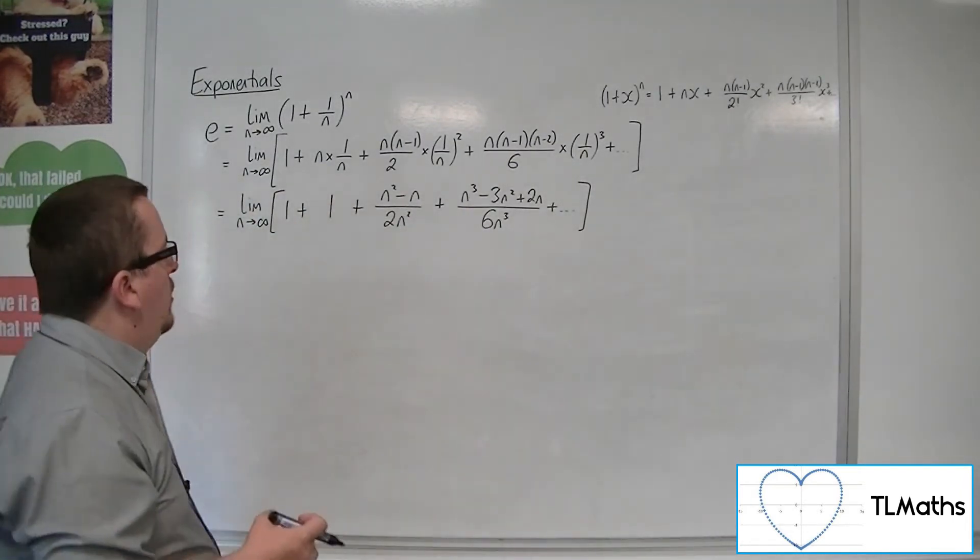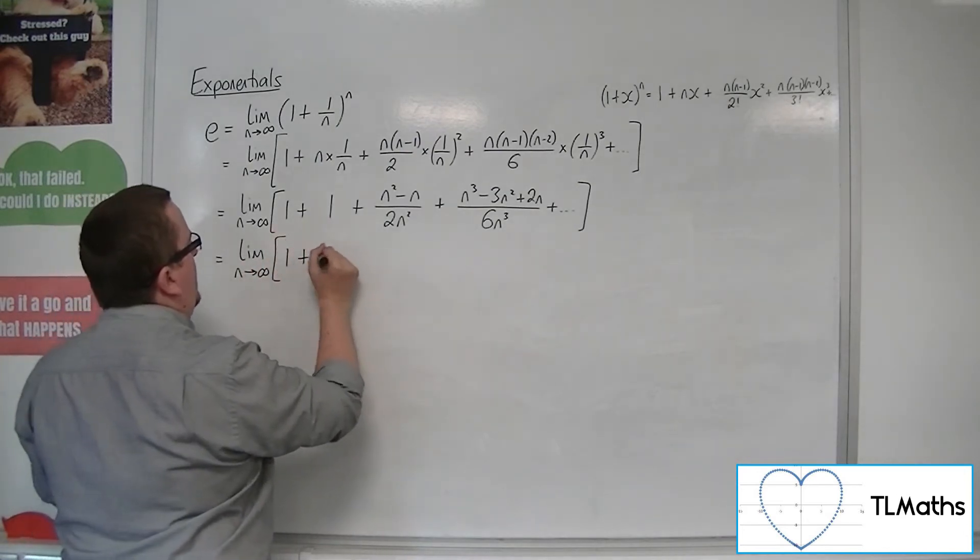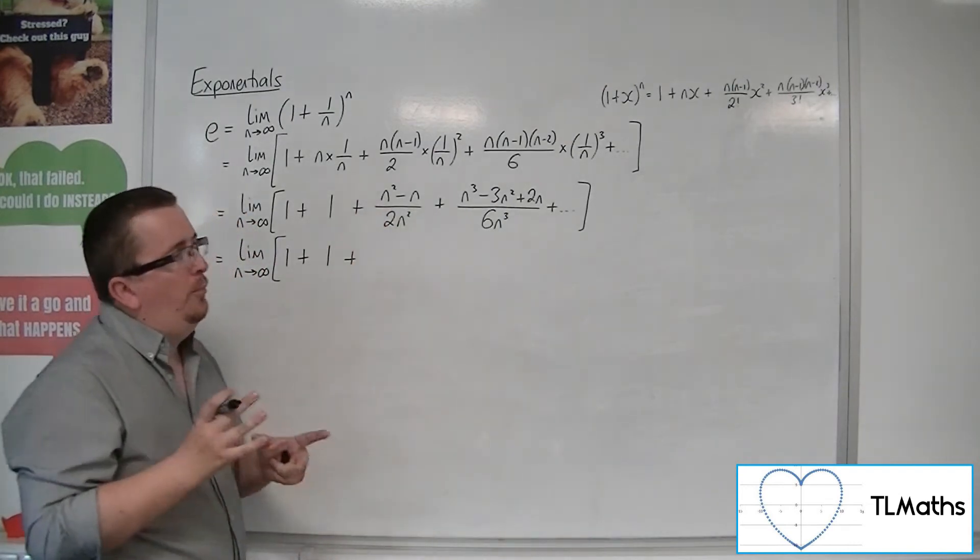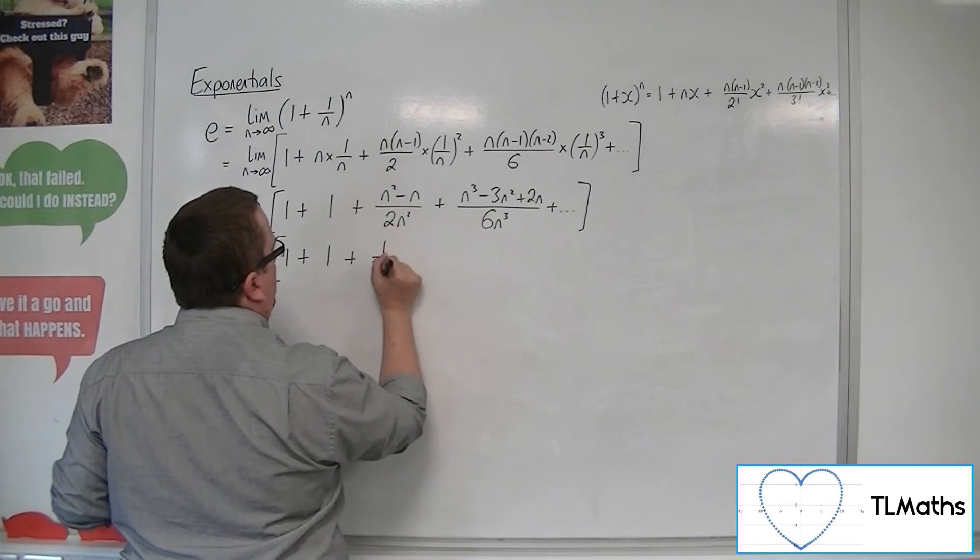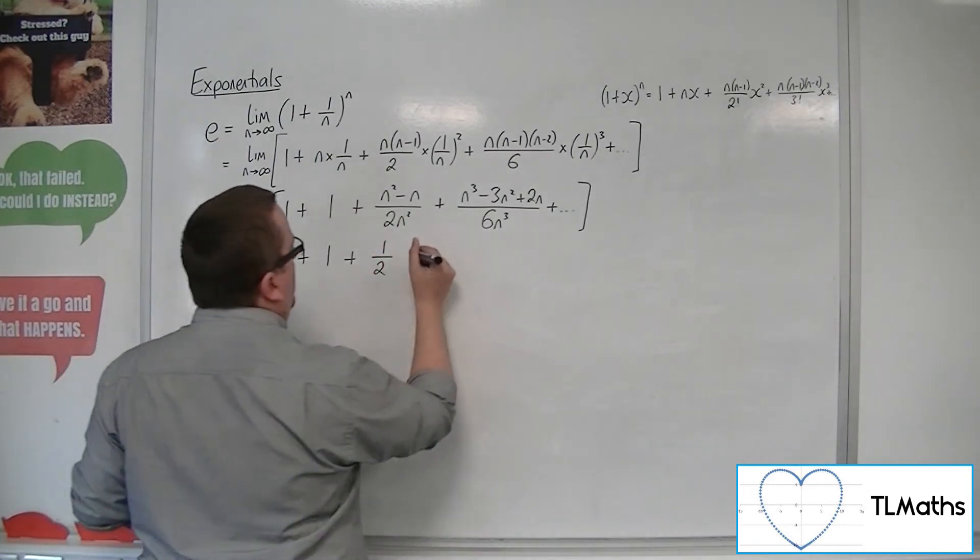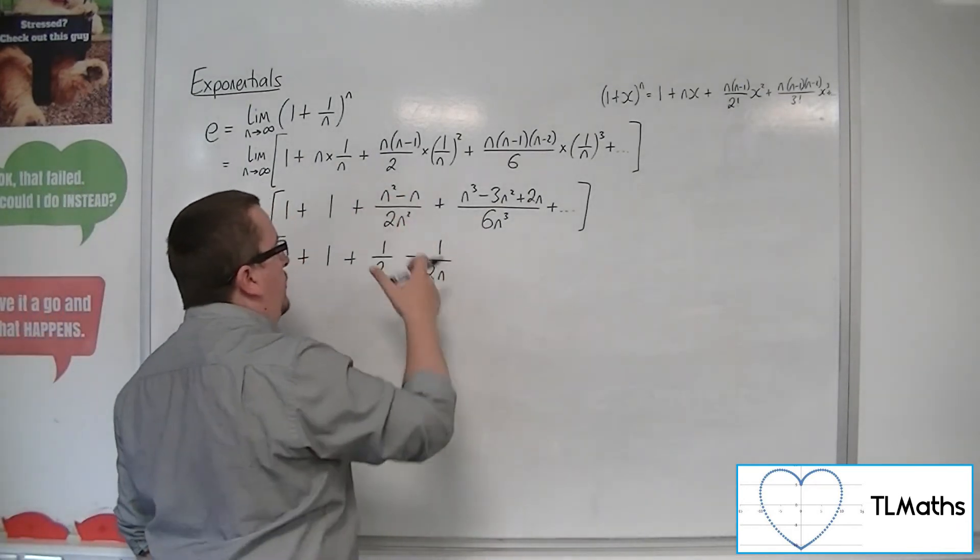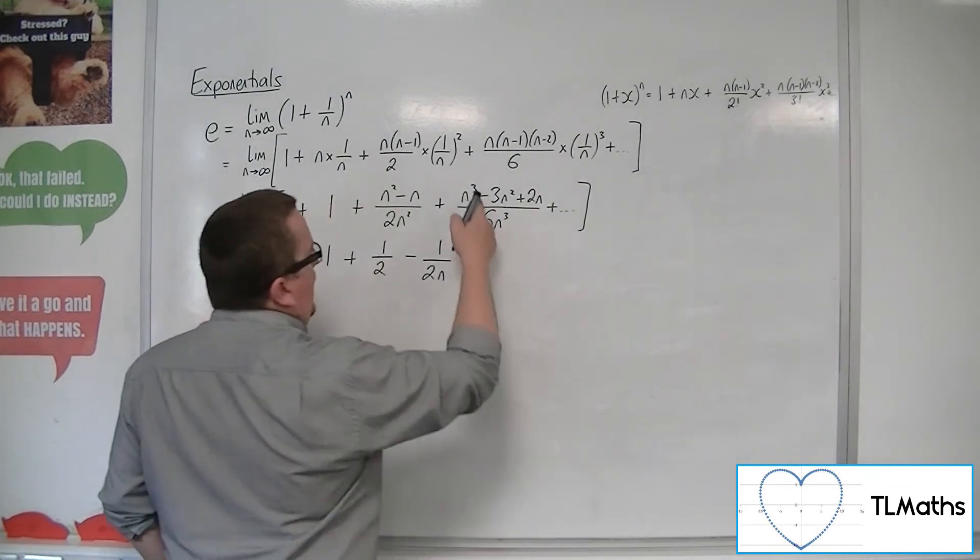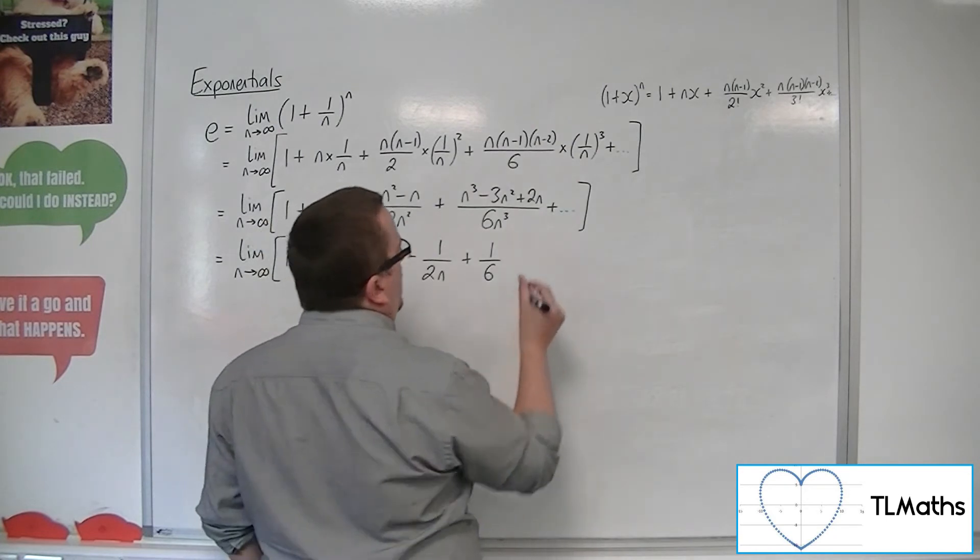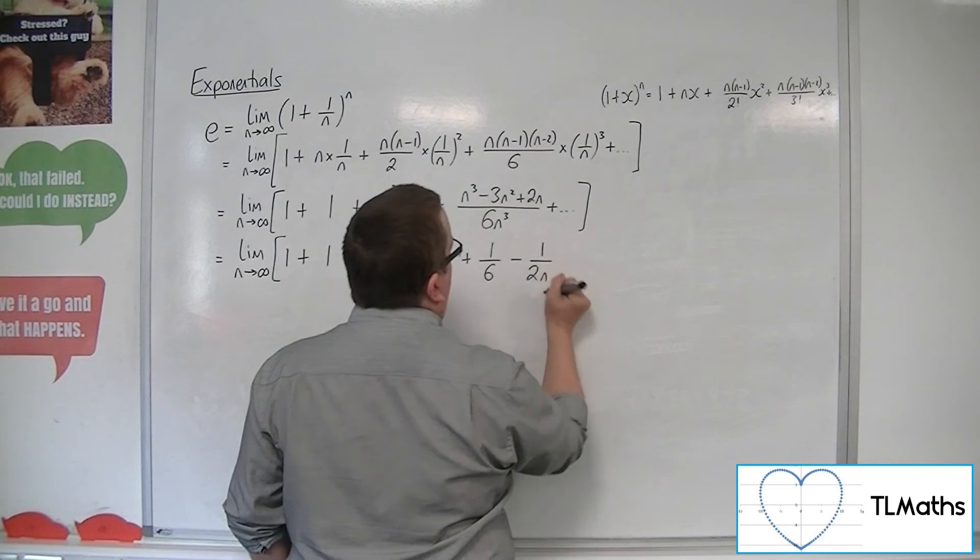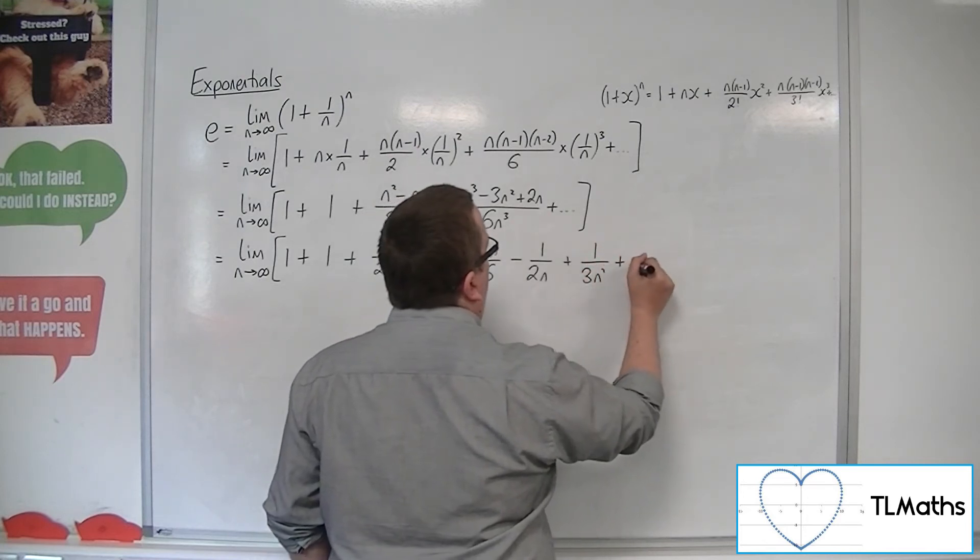Let's keep going. Now, I'm just going to leave that 1 plus 1 there. What I'm going to do with each of these, I'm going to split them into their principal parts, into separate fractions. So, we've got n squared over 2n squared, well, that's just a half, and we've got minus n over 2n squared, so that's minus 1 over 2n, when the n's have cancelled. Plus, n cubed over 6n cubed, is just 1 sixth. Then we've got minus 3n squared over 6n cubed, so that's minus 1 over 2n. And then 2n over 6n cubed is plus 1 over 3n squared. And then there's all those other terms.